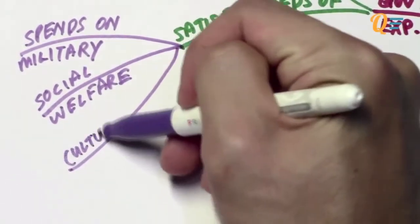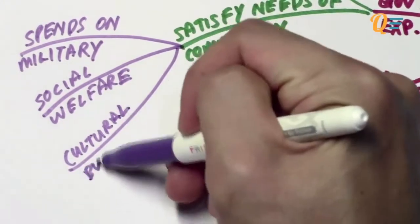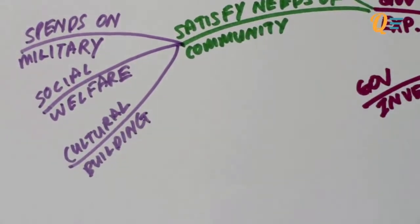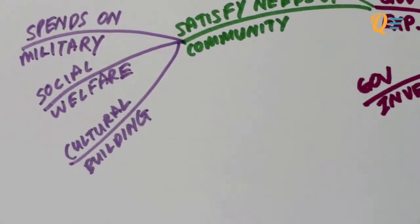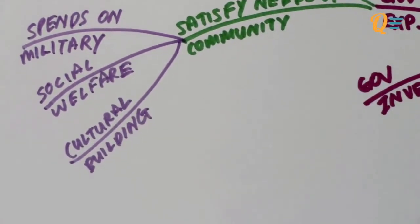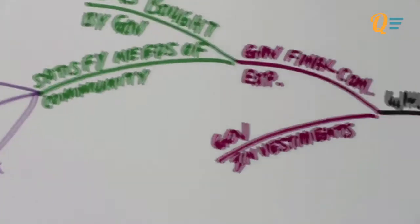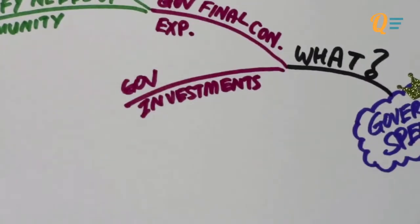Another example would be cultural building to establish some form of culture within the country — maybe building museums or landmarks that are significant in some way, like the Statue of Liberty or the Eiffel Tower.